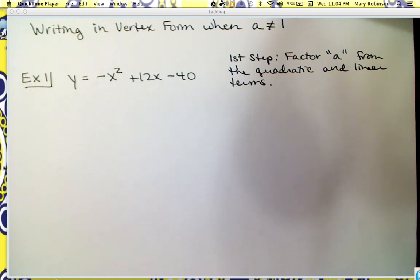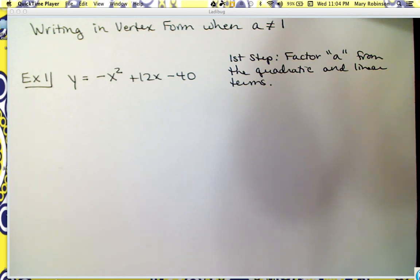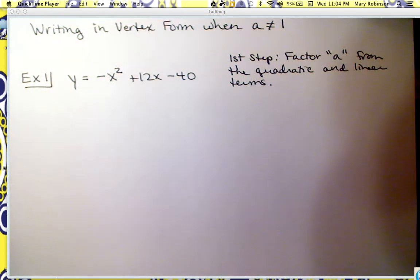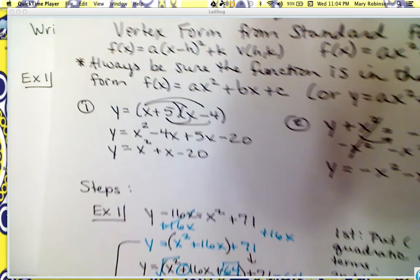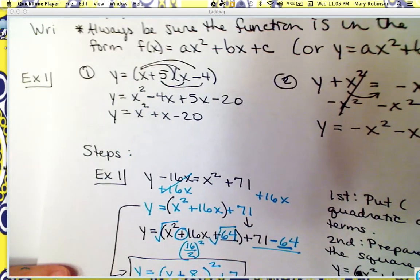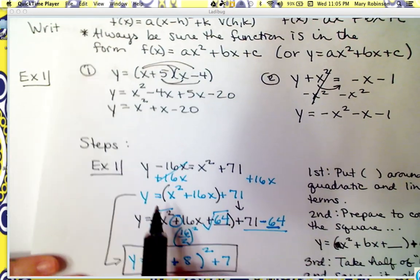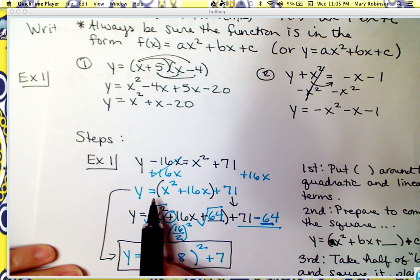This is the second video about writing quadratic functions in vertex form by completing the square. These examples will show you how to do it when a is not equal to 1. There are a couple of additional steps that are different from before. In the previous video, all of our quadratic functions had a leading coefficient of positive 1.